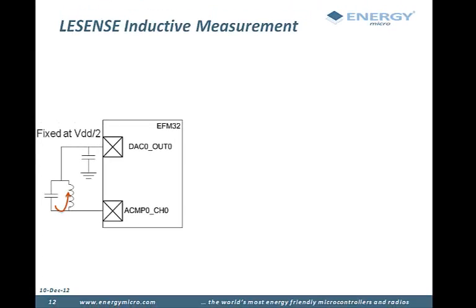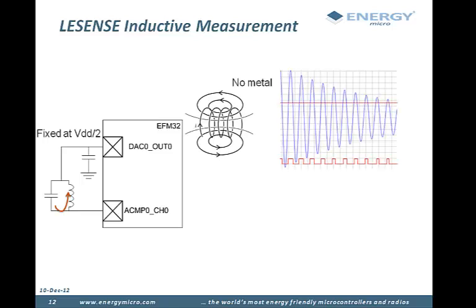The system is allowed to oscillate freely like this, and you can see the voltage at the comparator input in the figure on the right. LeSense can autonomously excite the sensor and then measure how long the oscillations keep going. Here we see oscillations at the comparator input without metal nearby.